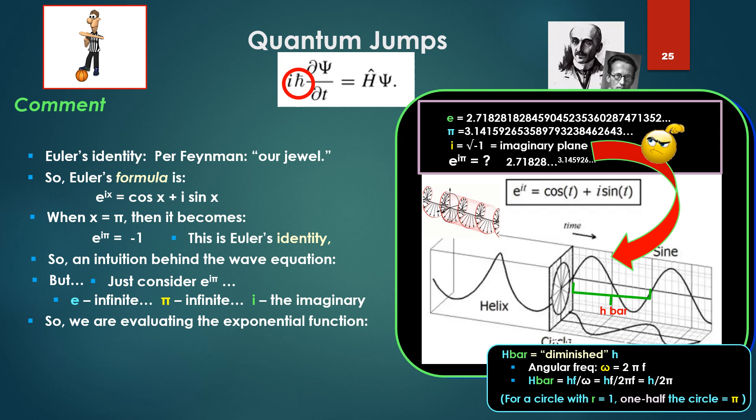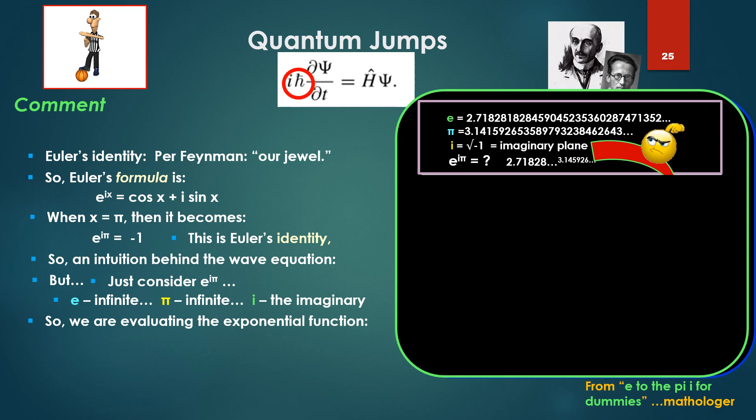So, we're evaluating this exponential function, e^(iπ), a strange thing because we're taking 2.71828 forever to the power of 3.1415 forever. How to evaluate that? What's its limit, so to speak? Where does it end up?